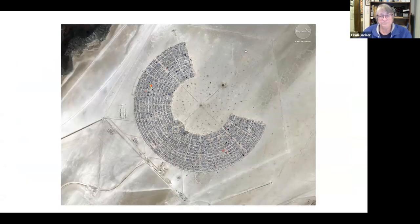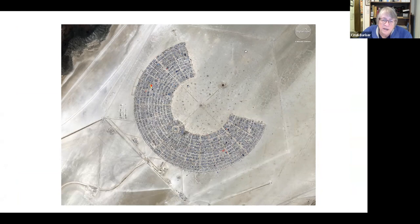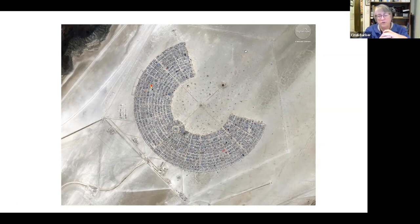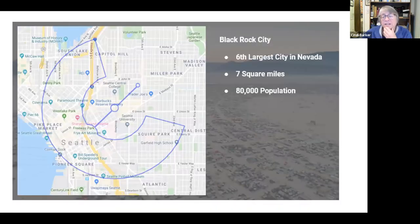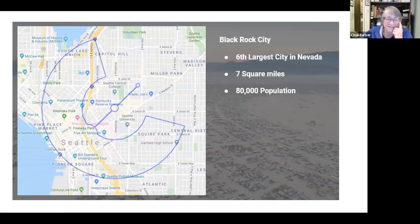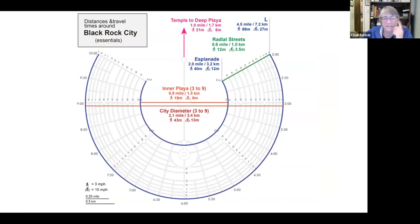Looking straight down, you can see a regular grid, and this area is where most of the artwork is. This is where security, communications, and centralized services are hosted — a logical information center so if you need information, you know where to go. The city is called Black Rock City, and it is 2.1 miles from the widest part to the widest part — roughly from South Lake Union all the way down to the International District if overlaid on Seattle.